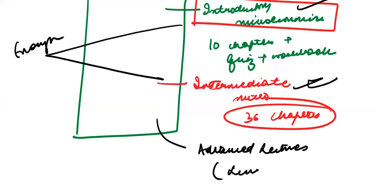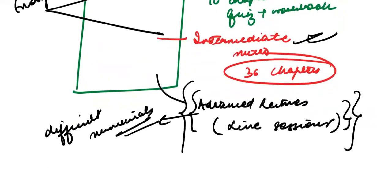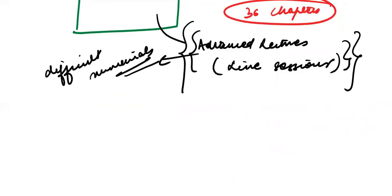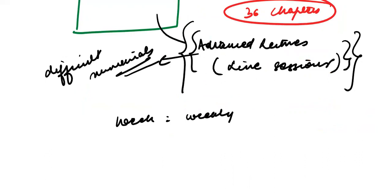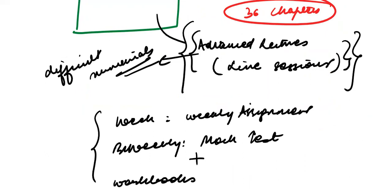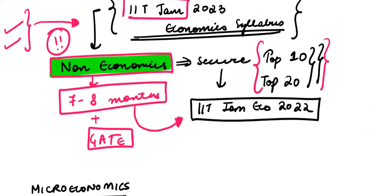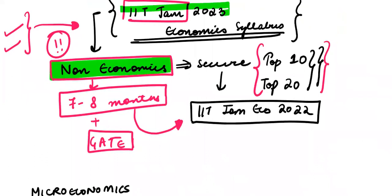The advanced lectures are covered in live sessions and will help you grasp difficult numericals so you don't panic in the exam. We will discuss topics and work through numericals together. Every week you will be given a weekly assignment on microeconomics, plus a bi-weekly mock test, plus enough workbooks to practice. That is how the entire microeconomics syllabus is divided for IIT JAM 2023.